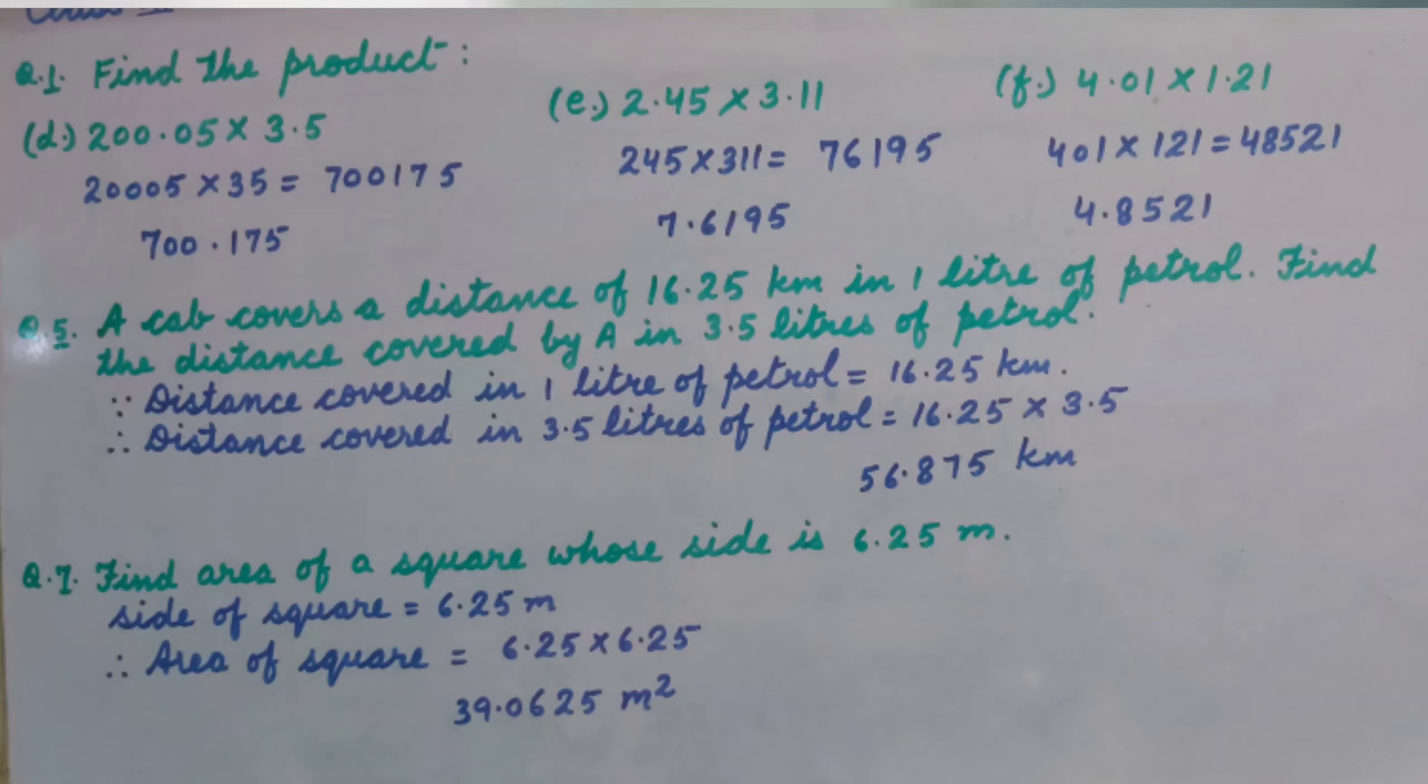Part F: 4.01 multiplied by 1.21. Similarly, we multiply the whole numbers first: 401 multiplied by 121, which is 48,521. We have 4 decimal places, so the answer is 4.8521.